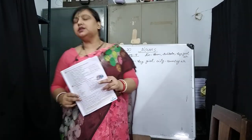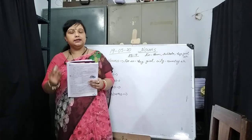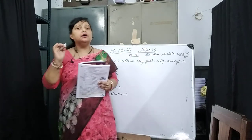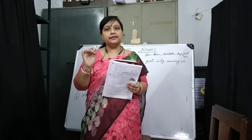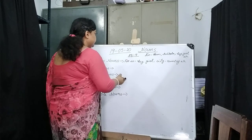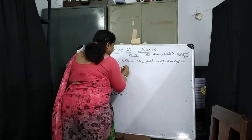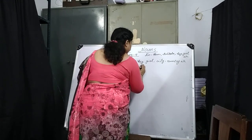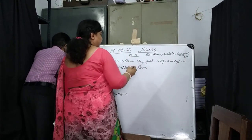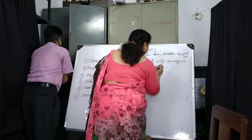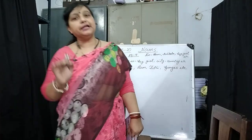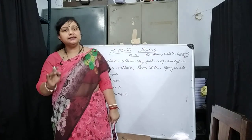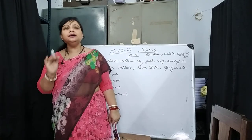Now come to proper nouns. What are proper nouns? Proper nouns are the special names of a particular person, place, animal, or thing, and they begin with a capital letter. For example: Kolkata, Ram, Ganges, etc.